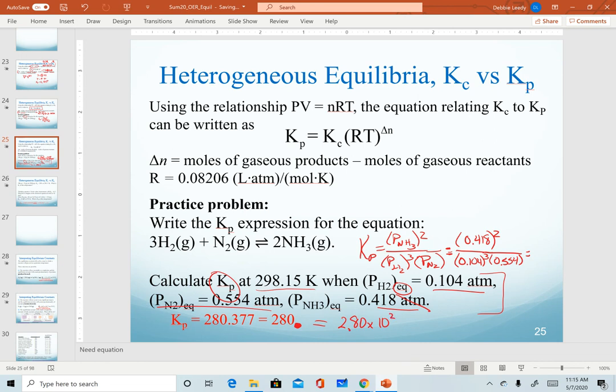A better option and more accurate, and I try to avoid doing this, but a more accurate option would be to write this in scientific notation to ensure the three sig figs. If you somehow were to omit that decimal place, this would count as two sig figs and you would lose the points for that. So we have our Kp value of 2.80 times 10 to the 2.